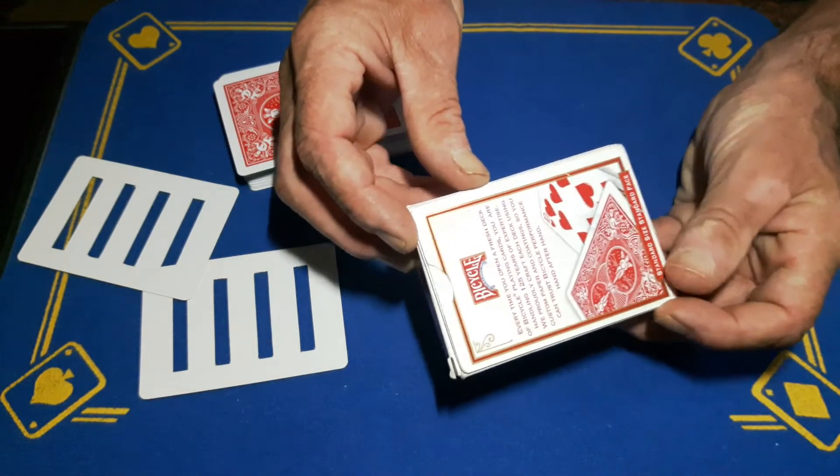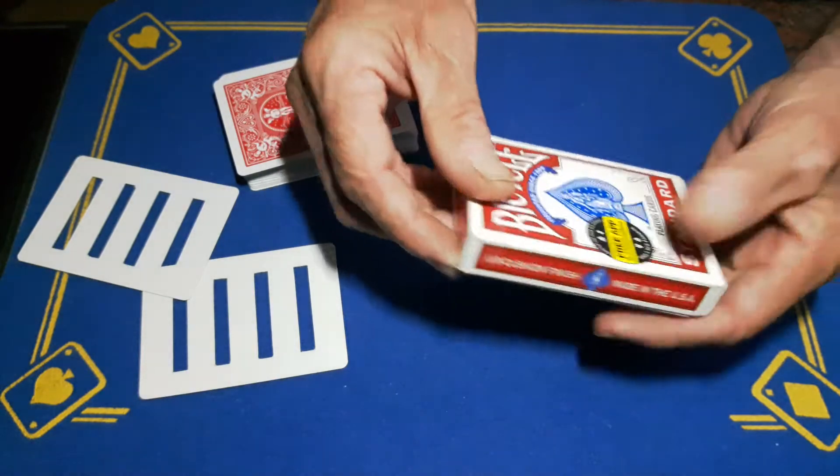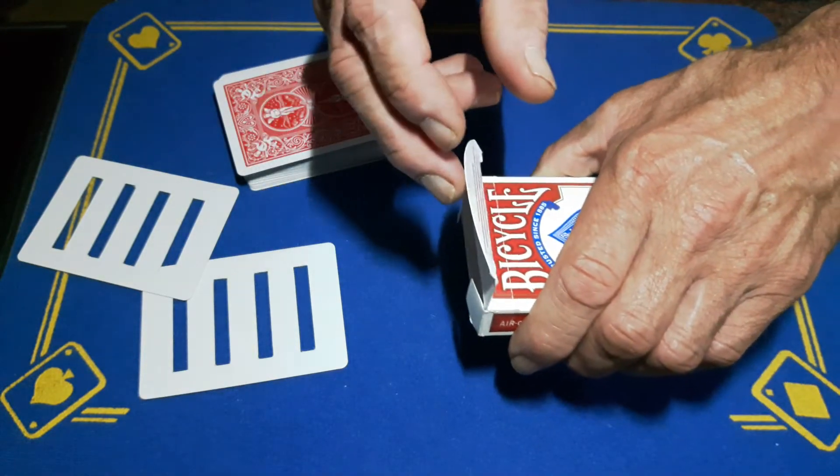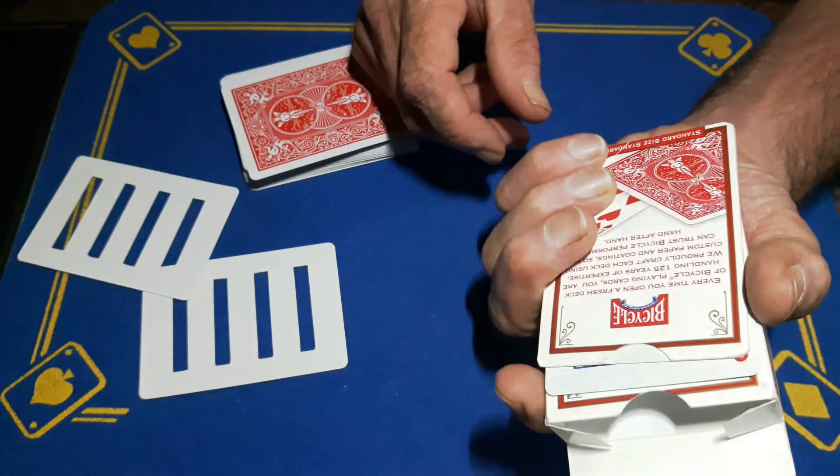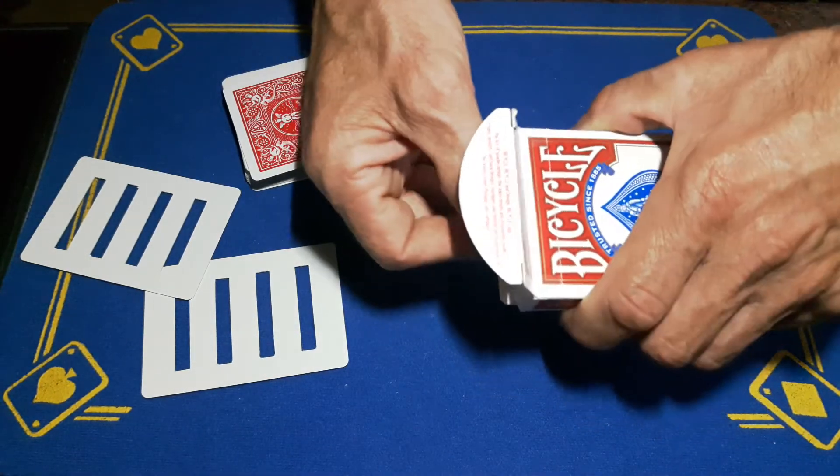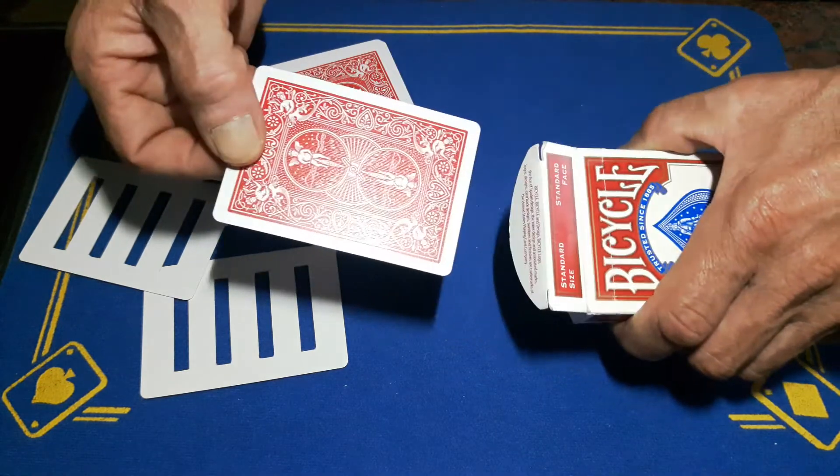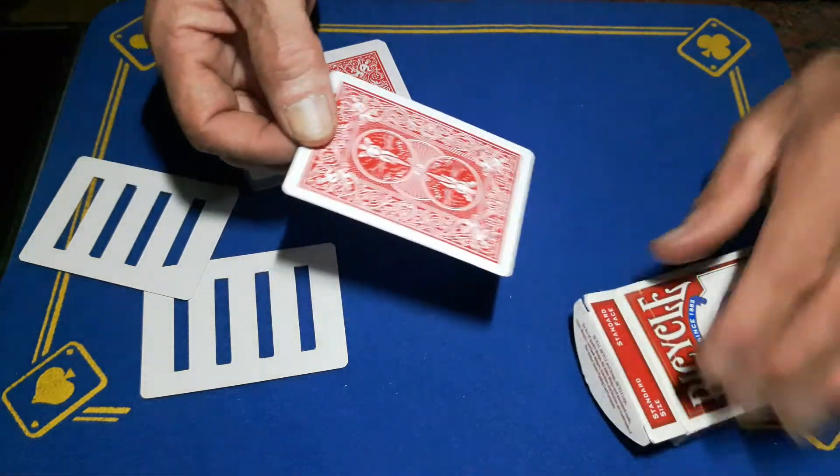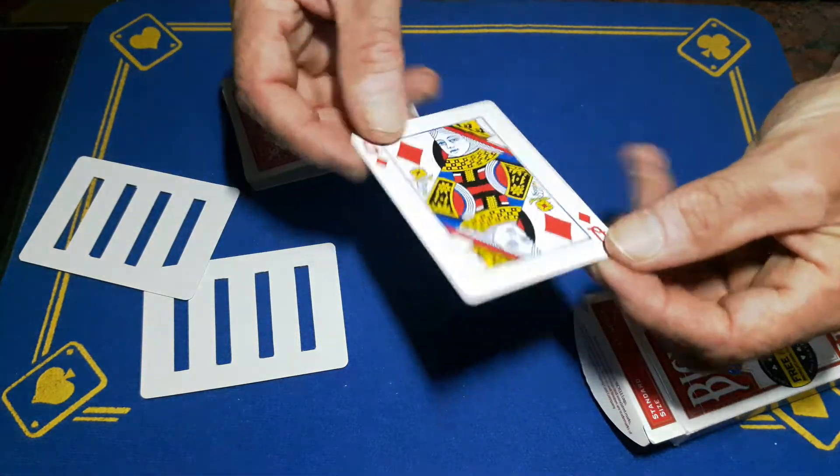So what this means is you can turn this box over, open up the flap. As you open up the flap, you're just going to pull down this card, contact with the card below it, and pull it out from inside of the box. You can flash the bottom again, and this will be their chosen card.